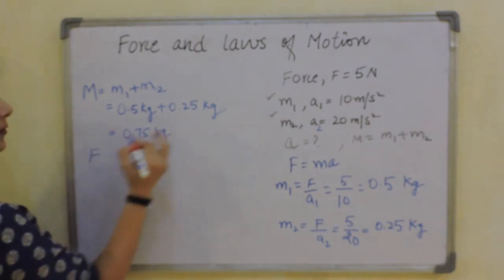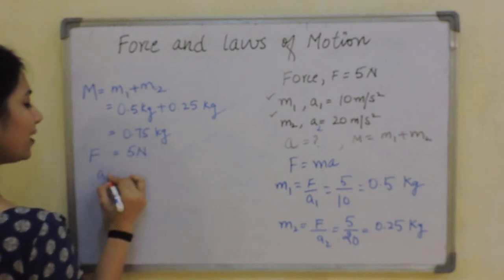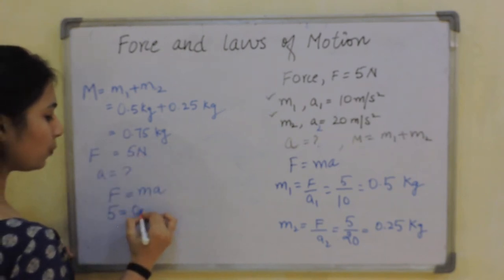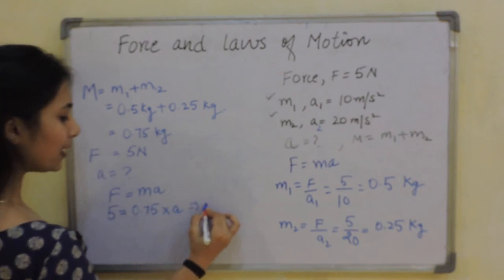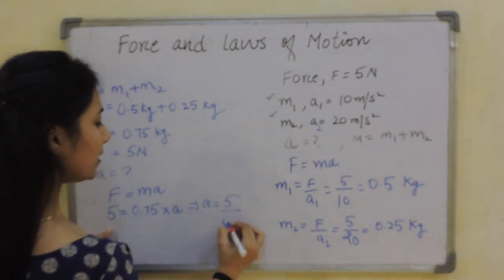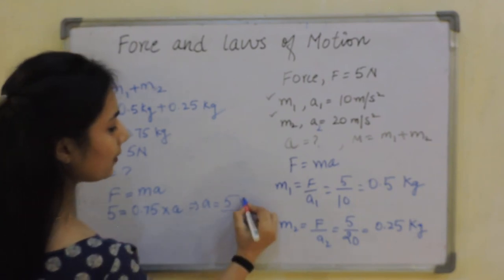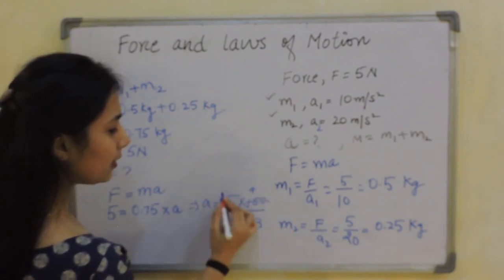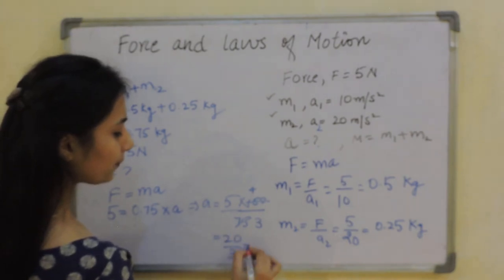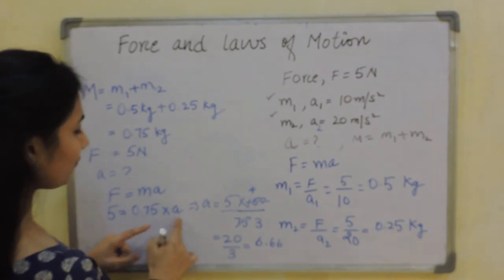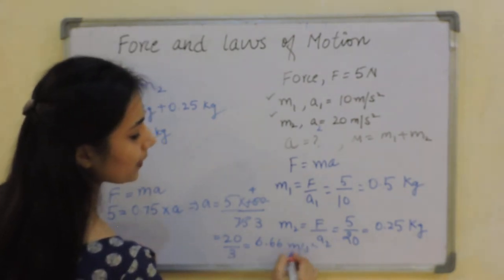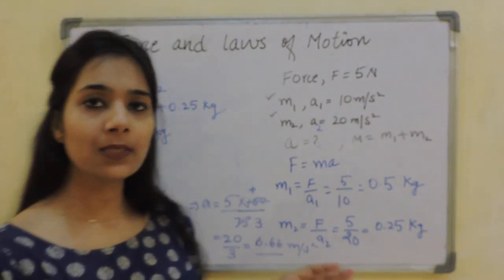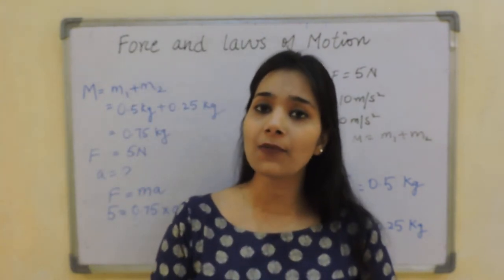Final mass M = 0.75 kg, force = 5 Newton. Using F = MA: 5 = 0.75 × A, so A = 5/0.75 = 500/75 = 20/3 m/s². Remember to include the unit — meter per second squared. The key steps: find individual masses from F/A, sum them, then divide force by total mass.